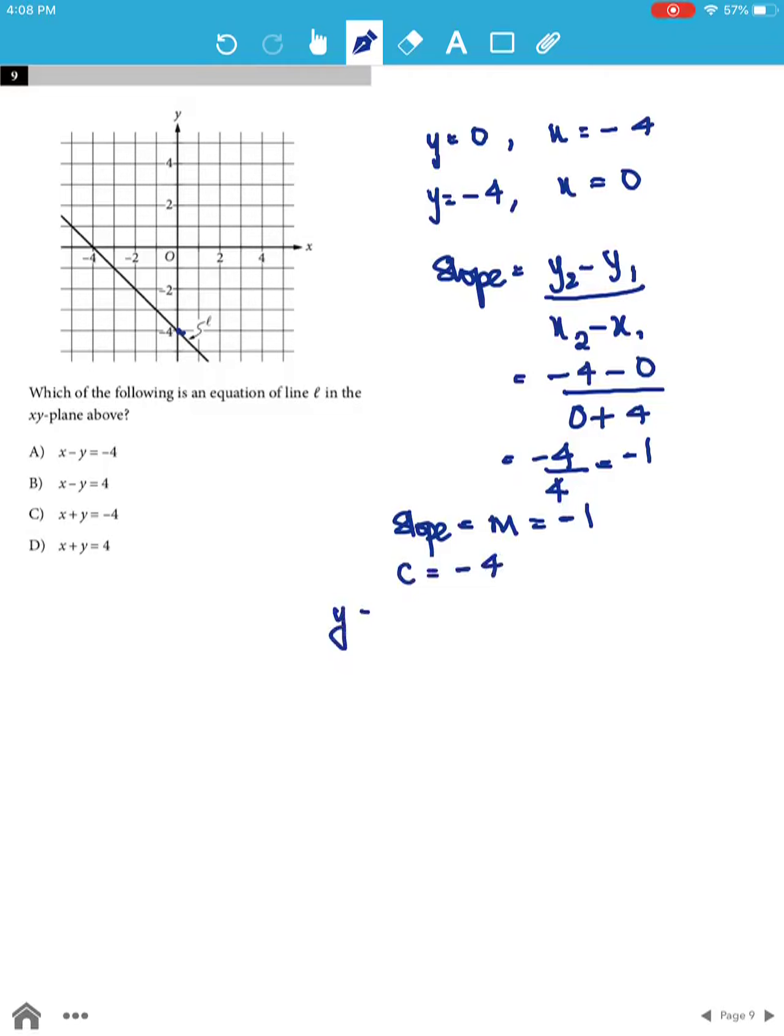And the equation of a line is y equals mx plus c. Therefore, y is going to be negative 1 times x minus 4. So y is negative x minus 4. So x plus y is equal to negative 4, which is option c.